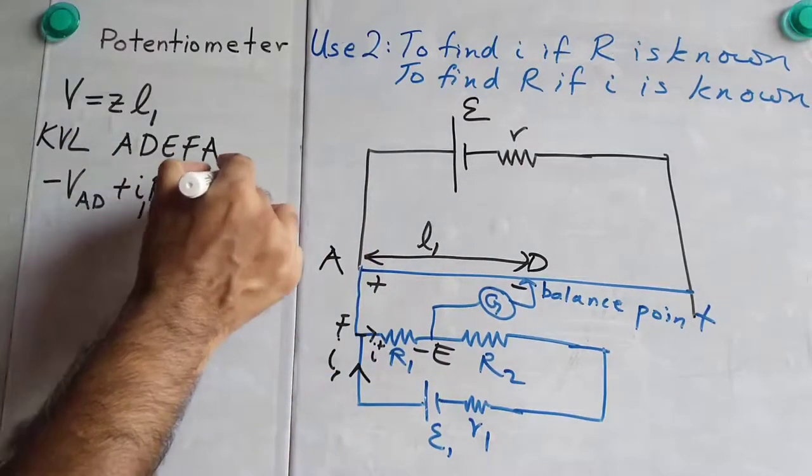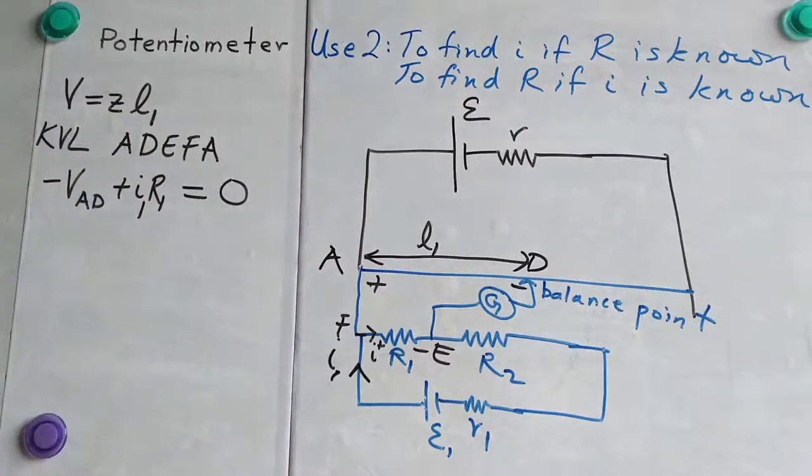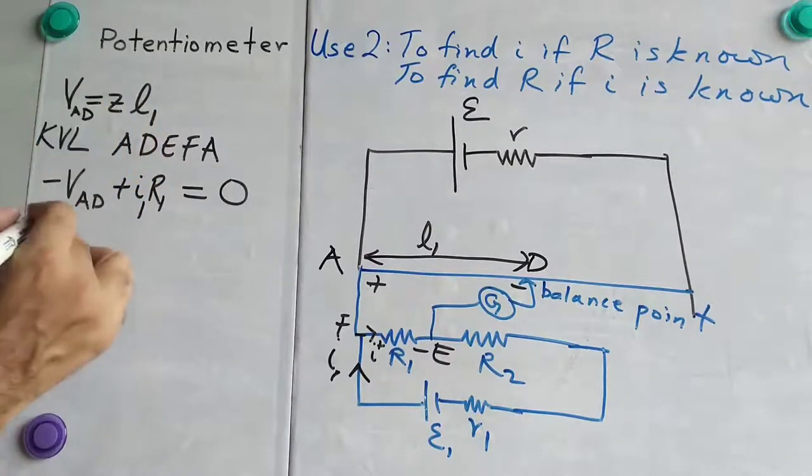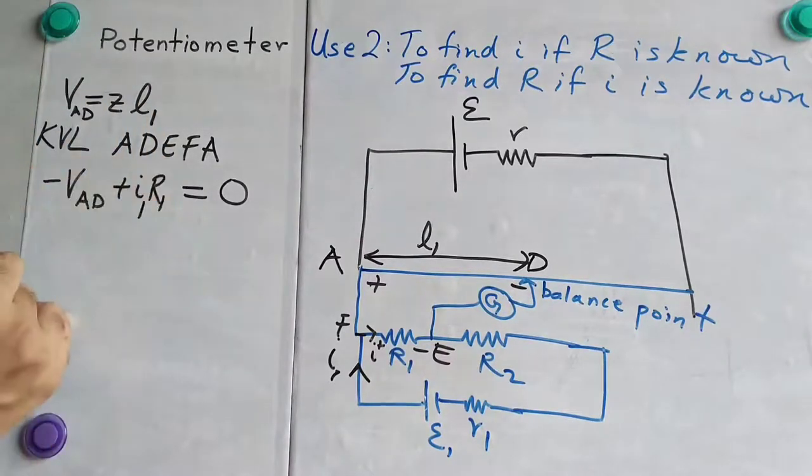This, we are coming back to the original point. So, it will be 0. So, therefore, V_AD, which is Z into L1. This is nothing but V_AD is equal to I1, R1.